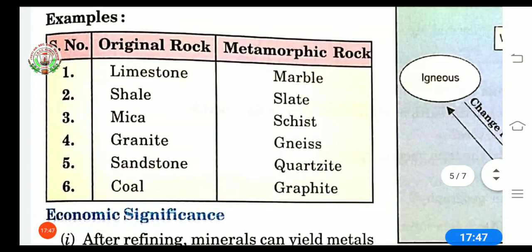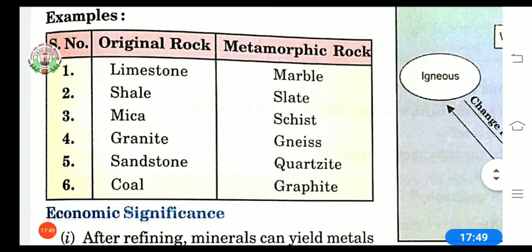These are the examples of rocks. Original rock that is limestone when it is transforming or changing its form, it is turning into metamorphic rock. Limestone turns into marble, shale turns into slate, mica turns into schist, granite turns into gneiss. Sandstone turns into quartz, coal turns into graphite.